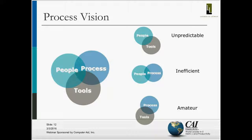Before we dive into details, we need to stop and reflect on what we're trying to achieve — what I would call a process vision. Back to Deming: it's not really enough to do your best. When you combine process, people, and tools, if you don't have them all as part of your vision, you end up with an imbalanced vision. Without process you get unpredictability; without tools you get inefficiency; without people focus you end up with a process that's fairly amateur.